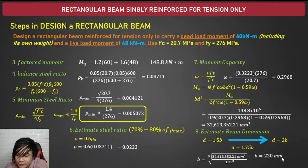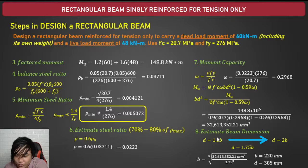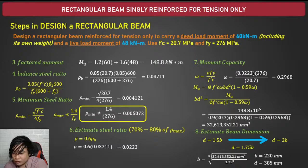The computed value of b is 220 mm. Note: if a problem specifies d = 1.5b, use that directly. If not specified, estimate. Sometimes if the reinforcement doesn't fit in a singly reinforced section, you may need to change the beam width — make it wider by using a smaller d/b ratio like d = 1.5b.